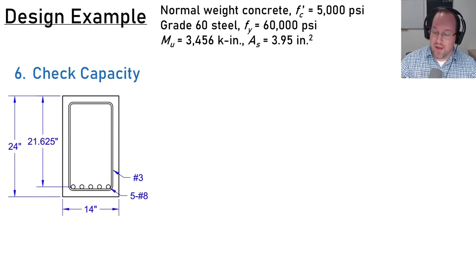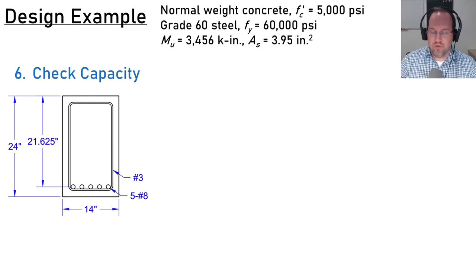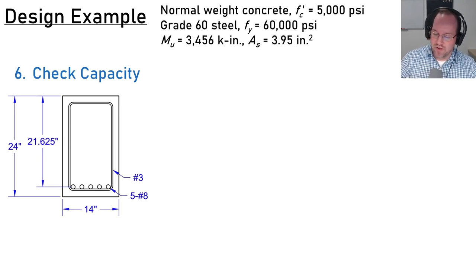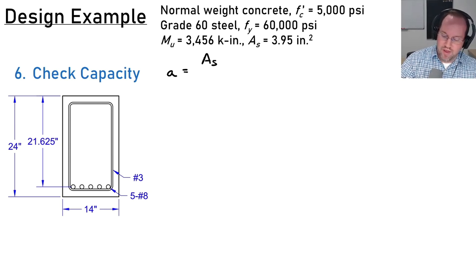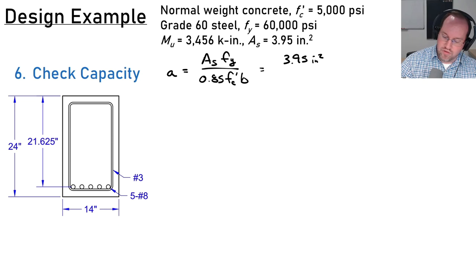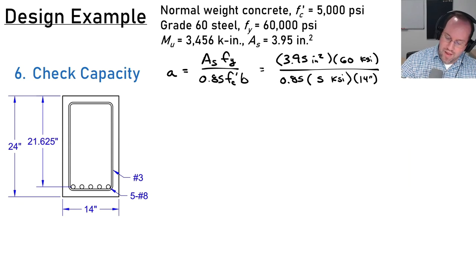With five #8 bars at the bottom, I can get the exact depth d: 24 inches minus cover (1.5 in), minus #3 stirrup diameter (3/8 in), minus the radius of a #8 bar (1/2 in) = 21.625 inches. For the capacity check, first find the depth of the compression block: a = As·fy / (0.85 f'c · b) = 3.95 × 60 / (0.85 × 5 × 14) = 3.98 inches.